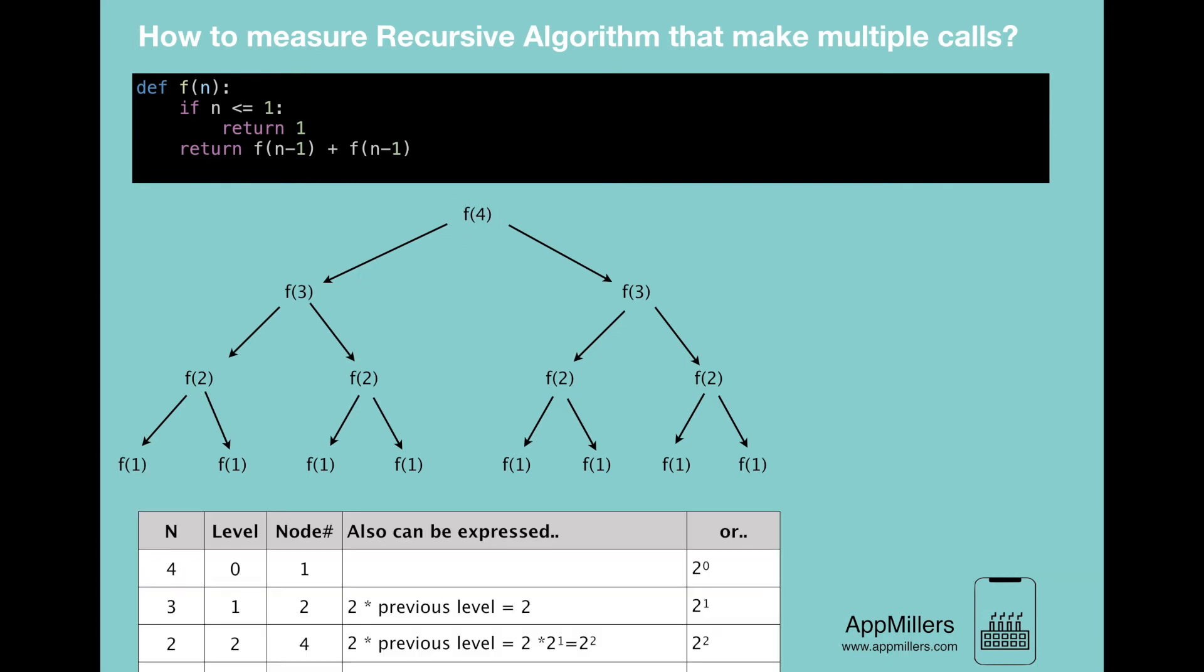So here in level 0, we have only one node. Then continuing to level 1, we have two nodes. Then in level 2, we have 4 nodes. Then in level 3, we have 8 nodes. Which means that we can express each level with 2 to the power of the level.